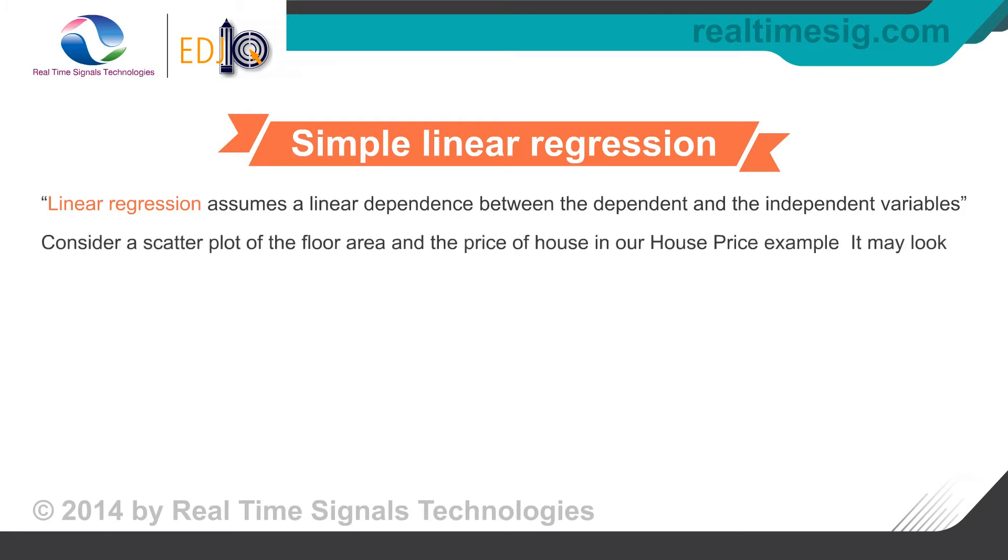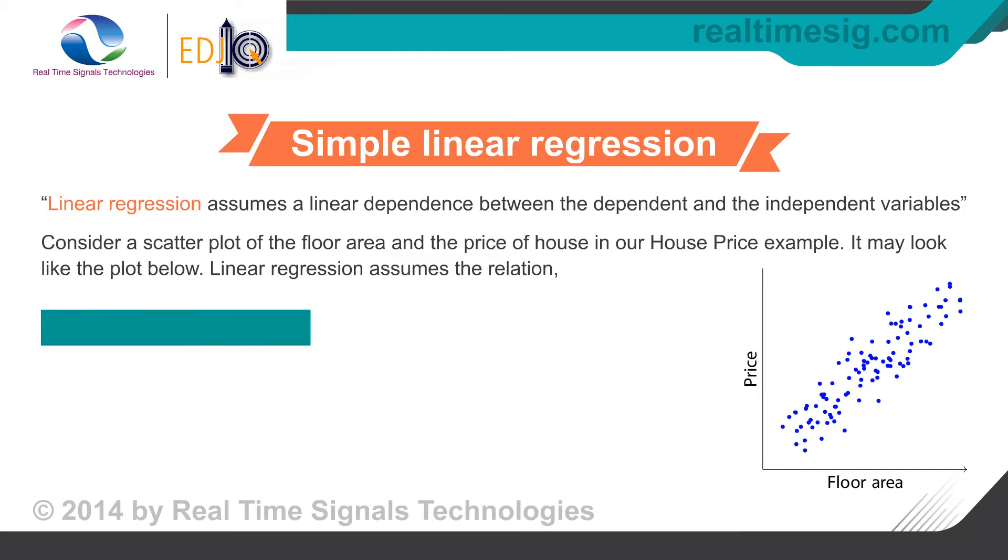Consider a scatterplot of the floor area and the price of house in our house price example. It may look like the plot below. Linear regression assumes the relation: Price equals m times floor area plus c. The constant m is the slope of the line and c denotes the intercept of the line on the price axis.